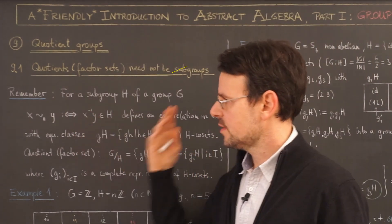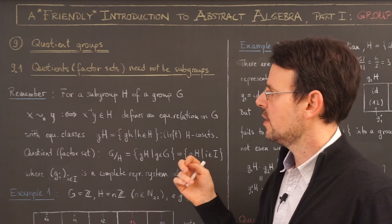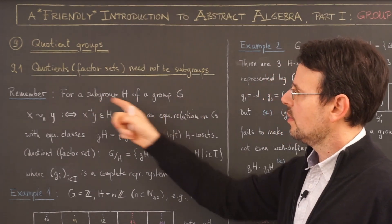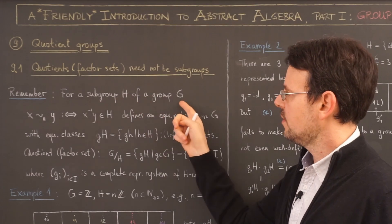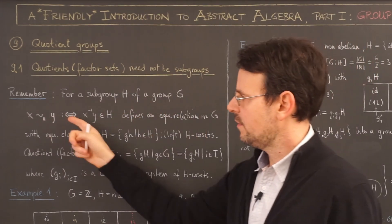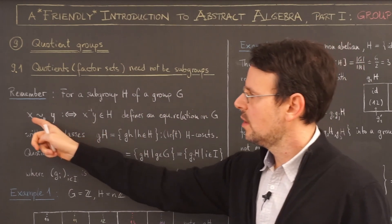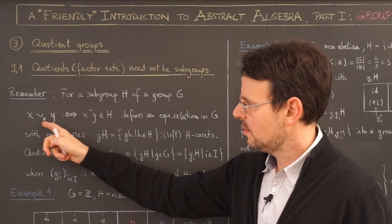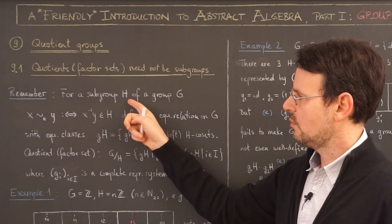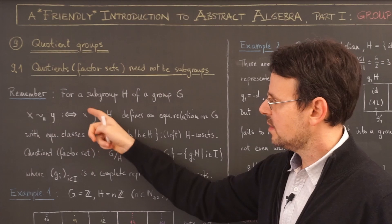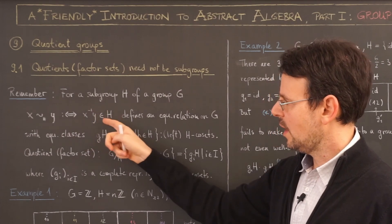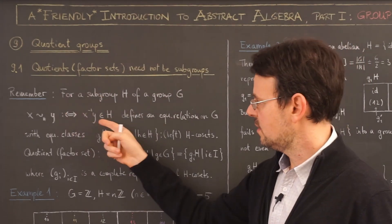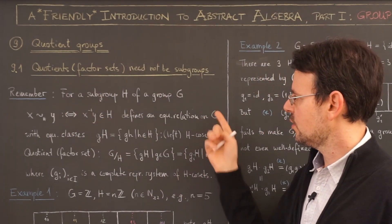So let's have a quick reminder of the things we already learned. As always G is a group, H is a subgroup of this group G, and we define the following relation on G. We say X is equivalent to Y with respect to the subgroup H, if and only if X inverse Y lies in H.